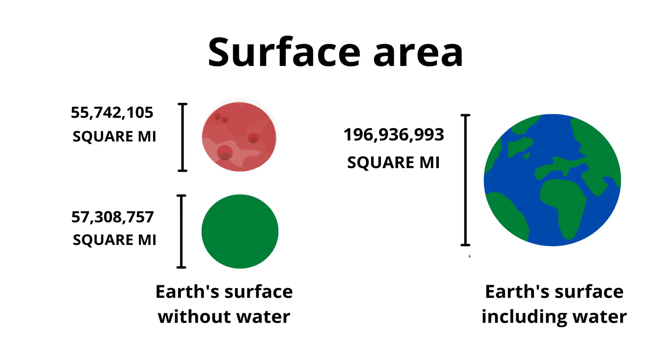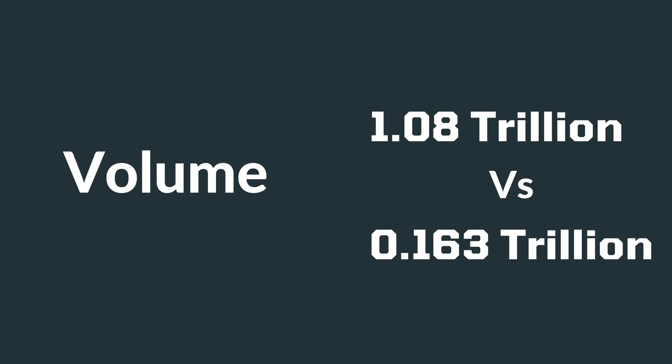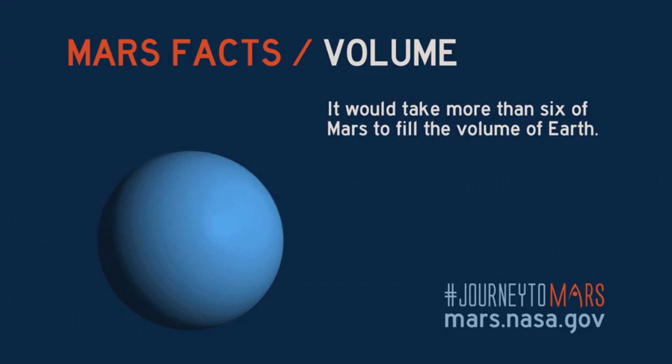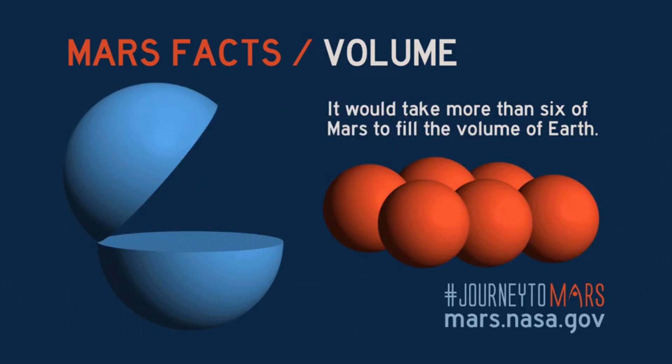Number three: Volume. If we compare the volumes, the volume of Earth is 1.08 trillion cubic kilometers, while the volume of Mars is 0.163 trillion cubic kilometers. It will take around six Mars to fit into the volume of planet Earth.